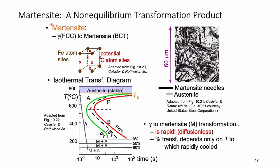Martensite is a special structure in the Fe-cementite system. This is the structure we call non-equilibrium structure. The gamma phase is a single-phase FCC structure. Martensite is also a single-phase structure — a tetragonal structure. The corner atoms are all iron; cross positions are for carbon atoms, though not all cross positions are occupied by carbon.